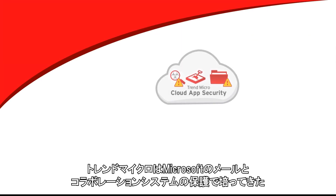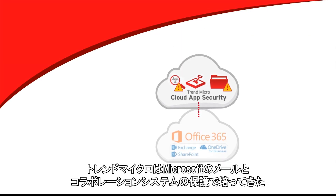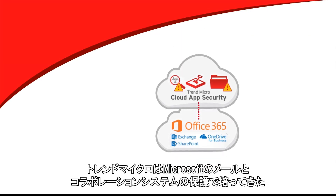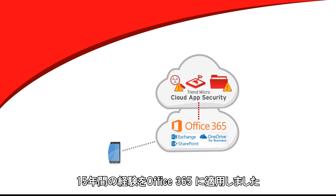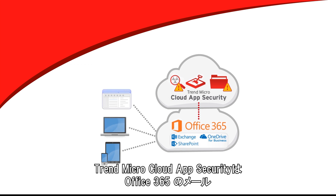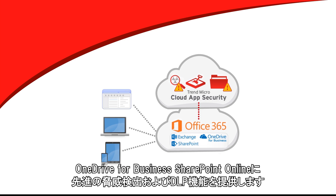Trend Micro brings its 15 years of experience in protecting Microsoft email and collaboration systems to Office 365. Trend Micro Cloud App Security provides advanced threat detection and DLP for Office 365 email, OneDrive for Business, and SharePoint Online.